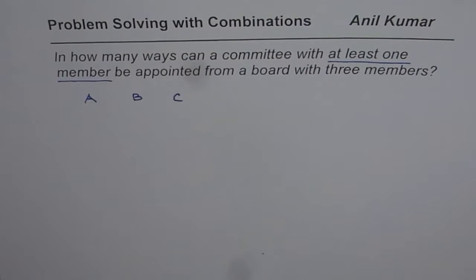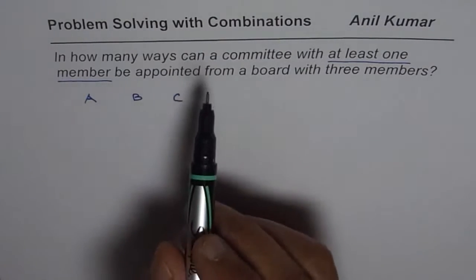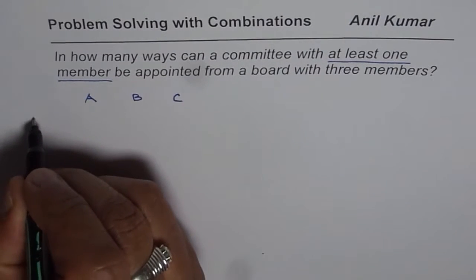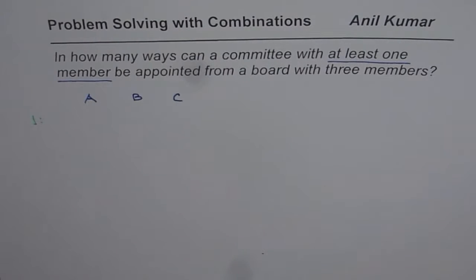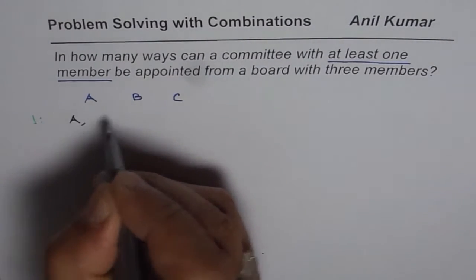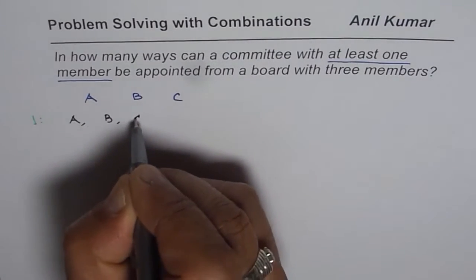Now we'll follow two different strategies mainly to develop a formula also with the help of this example. Let's say that the committee has only one member. So if there is only one member then the combinations could be one member could be A, B or C.